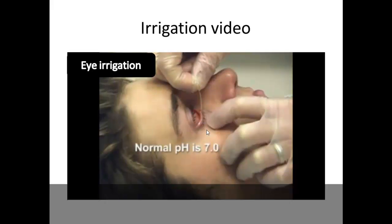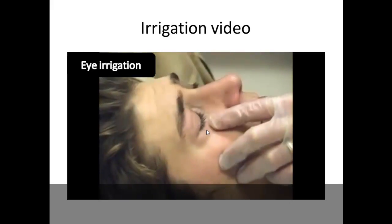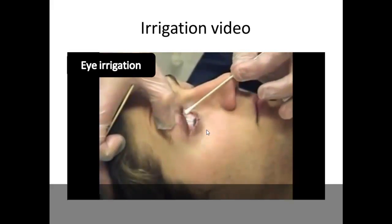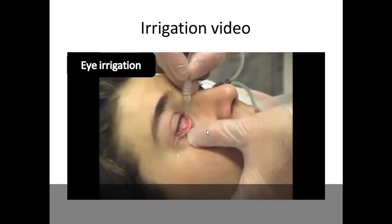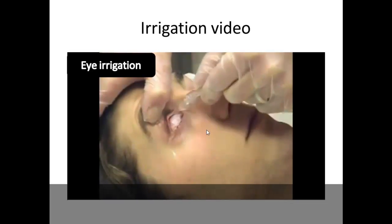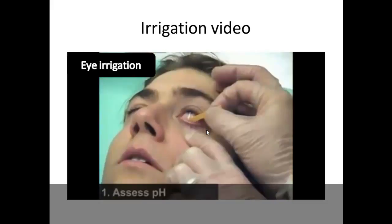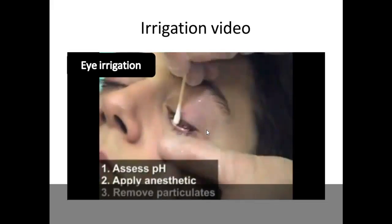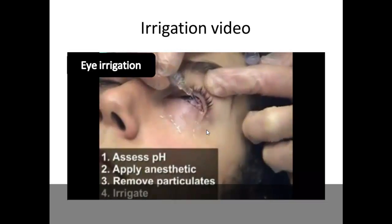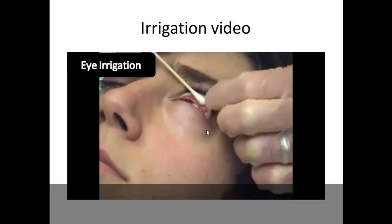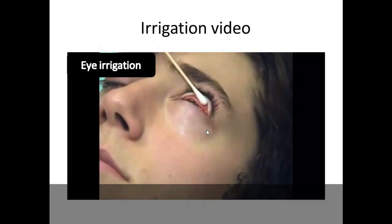For irrigation: first examine the pH, then instill paracaine into the eye, rub the fornix and clear the surface of any particles — both upper and lower lids must be wiped. Then irrigate with a cannula, instilling paracaine if the patient has pain in between. Never forget the other eye. The order is: assess pH, apply anesthetics, remove particulate matter, irrigate, then compare pH at the end.